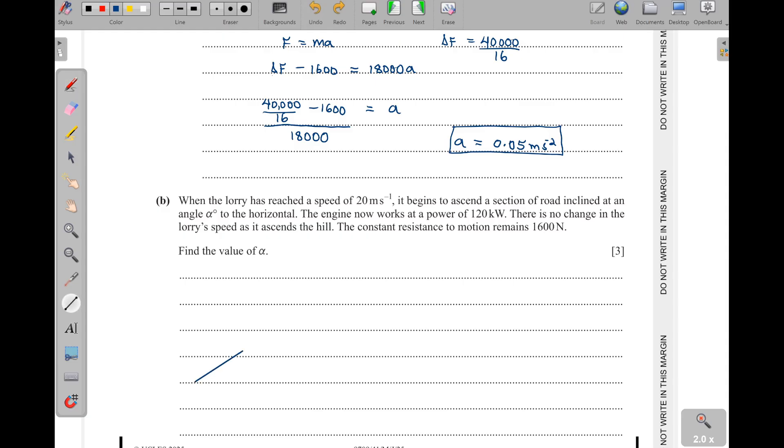The constant resistance to motion remains 1,600 newtons. Again I'm going to draw something here. This lorry here is ascending this hill, and as it is ascending the hill, we should know that there is a driving force here. Then there is this 1,600 newtons, but there is also a component of its weight, which is MG sine. So it has to be 18,000, the MG, then sine alpha. Those are the forces affecting that motion. Remember, V is given as 20, the speed.